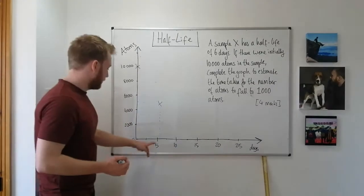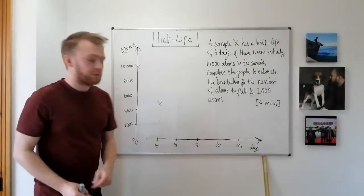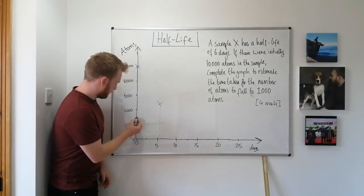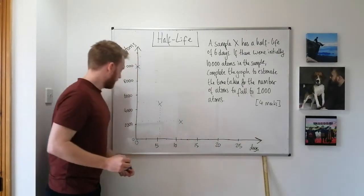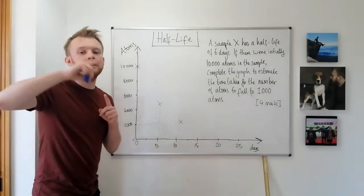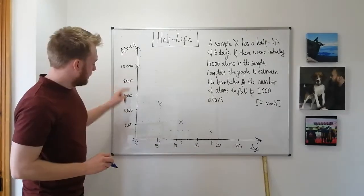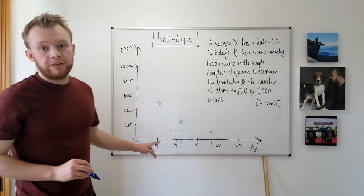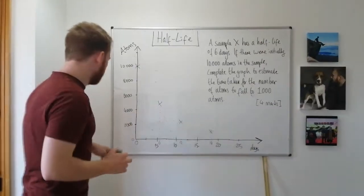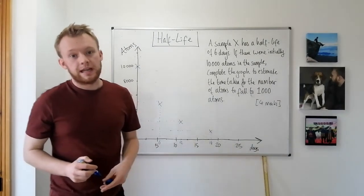After another six days — so from six to twelve days — the number of atoms would have fallen from 5,000 to 2,500. Half of 2,500 is 1,250. So after another six days, the number of atoms would have fallen to 1,250. Now, 1,250 is not fewer than 1,000, so we need to do another half-life and plot another data point. Half of 1,250 is 625.